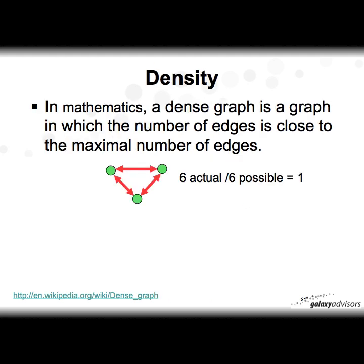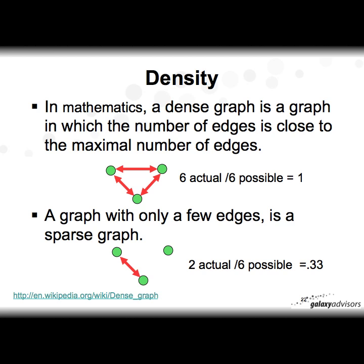Density is another network measure. A dense graph is one in which the number of edges is close to the maximum number of edges. With three nodes, each link going two ways gives six actual possible links divided by six possible, so the density of this graph would be one — six divided by six equals one. A graph with only a few edges is called a sparse graph. With the same three nodes and only one link, that's two actual divided by six possible, giving a density of 0.33.